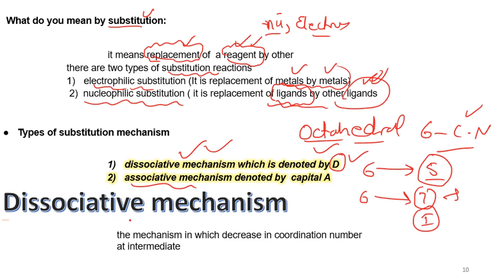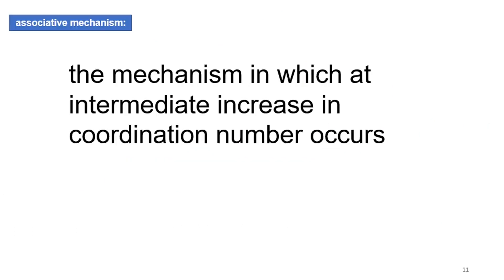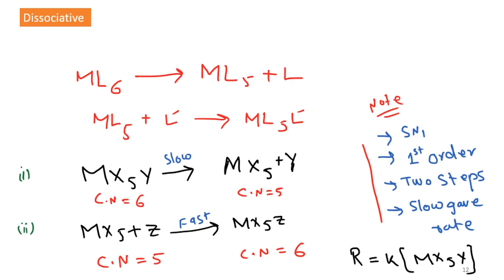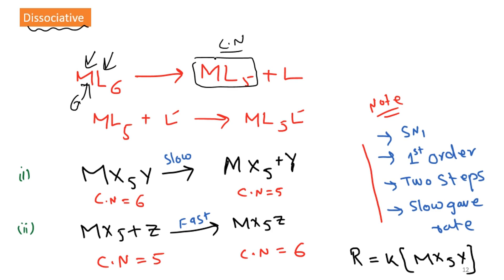To summarize: dissociative means a decrease in coordination number in the intermediate state, and associative means an increase in coordination number in the intermediate state. In the example of the dissociative mechanism, we take a metal complex with six ligands attached, so the coordination number is six. When one ligand dissociates, we get an intermediate state with coordination number five — decreased by one — and the leaving ligand departs.